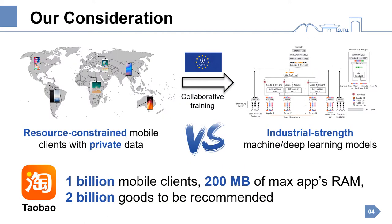In this work, we consider how to enable resource-constrained mobile clients to train industrial-strength deep learning models while keeping user data private. We take the largest online shopping platform in China, Taobao, for example. There are 1 billion mobile clients, the maximum size of the app is 200 megabytes, and there are 2 billion goods to be recommended.